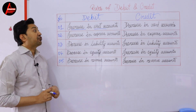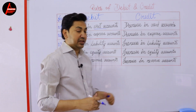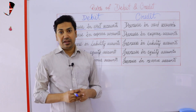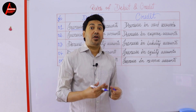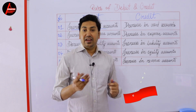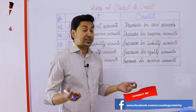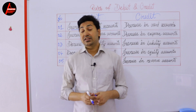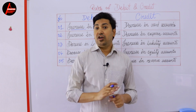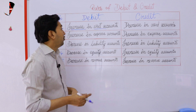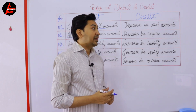Number two: increase in expense account is debited. What is an expense? When a business spends money on a day-to-day basis, or any kind of expenditure happens again and again in a year, those will be your expenses. For example, purchased goods, stationery, fuel expenses, office expenses, advertising expenses, salaries, wages — these all will be your expense accounts. This rule says if your expense increases, your expense will be debited.